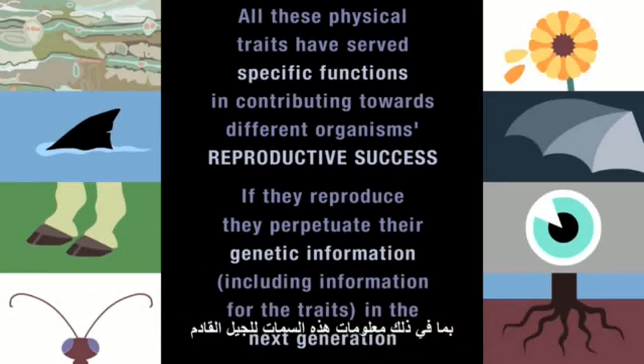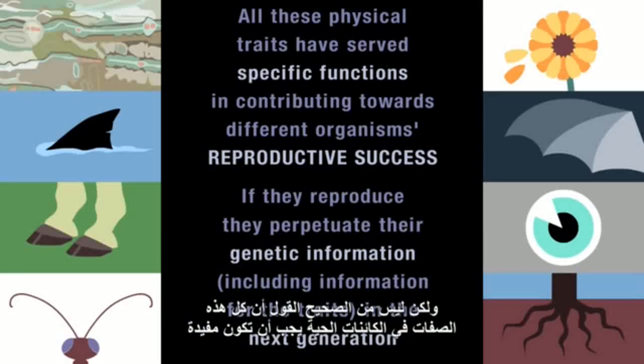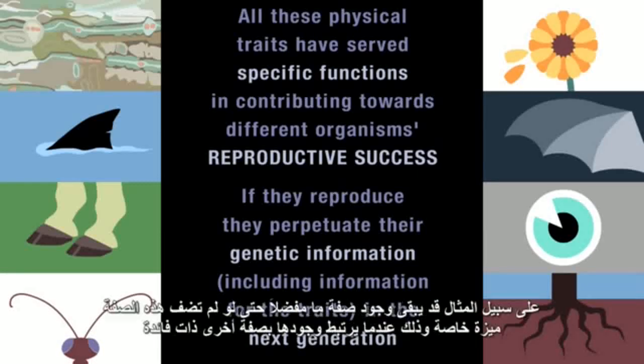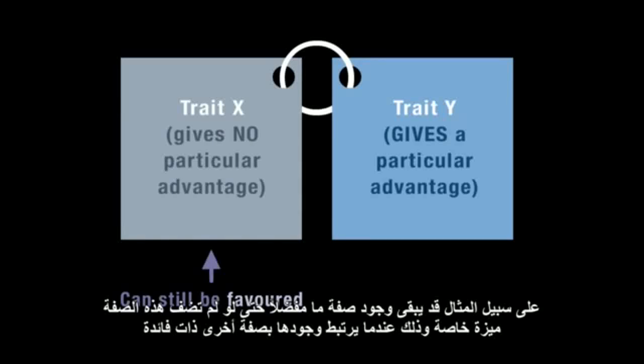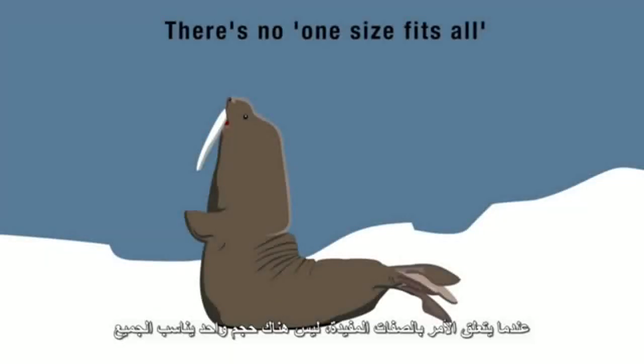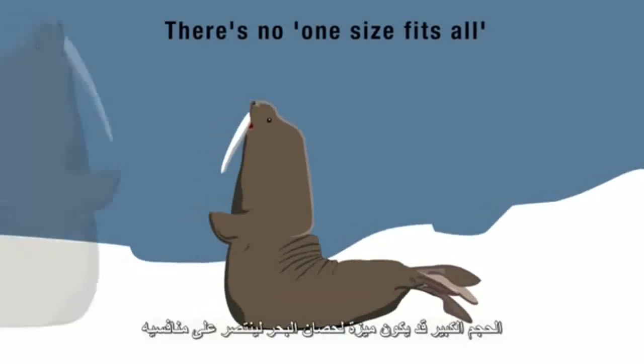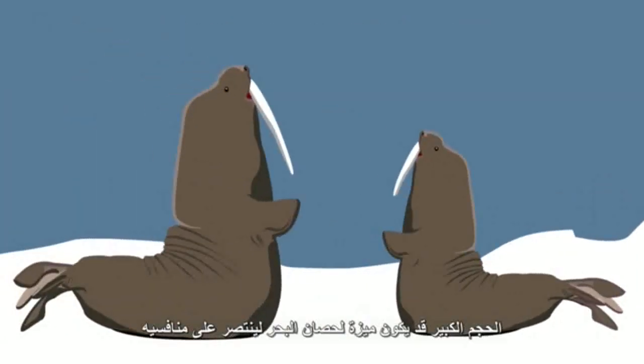But it's not true that every single trait of a living organism must be advantageous. For example, traits that give no particular advantage can still be favoured if they're associated with other traits that do. When it comes to beneficial traits, there's no one-size-fits-all.